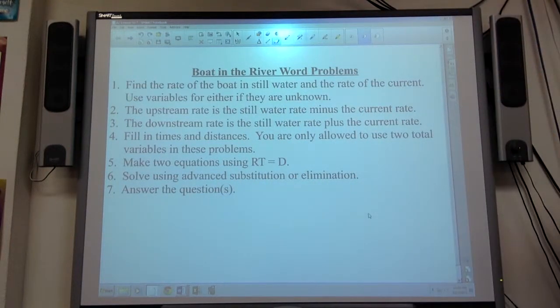Okay, lesson 92 involves what's called a boat in the river word problem. It could also be an airplane in the jet stream word problem. It's involving some vehicle where an outside force is acting upon that vehicle to speed them up or slow them down.